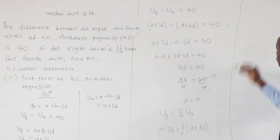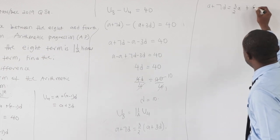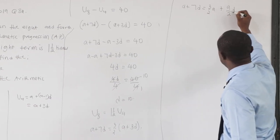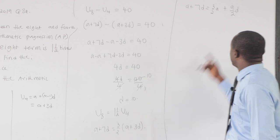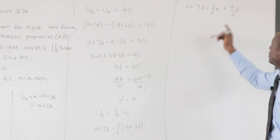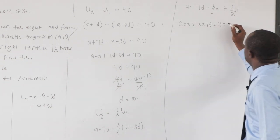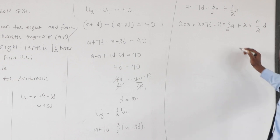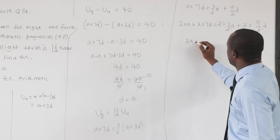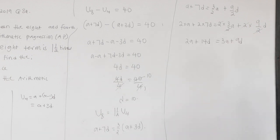Let's expand. So you have a + 7d = (3/2)a + (9/2)d. Now 3 times 3 is 9. The LCM is 2, so we multiply through by 2. So 2a + 14d = 3a + 9d.